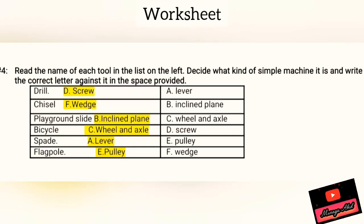Today is 22nd January and we have to do question number four of the worksheet. It's a matching exercise, and I have solved it out for you. Drill (D) — it's a screw. Chisel (F) — it's a wedge. Playground slide — it's an inclined plane (B). Bicycle wheel and axle (E). Spade (A) — a lever. Flagpole — a pulley.